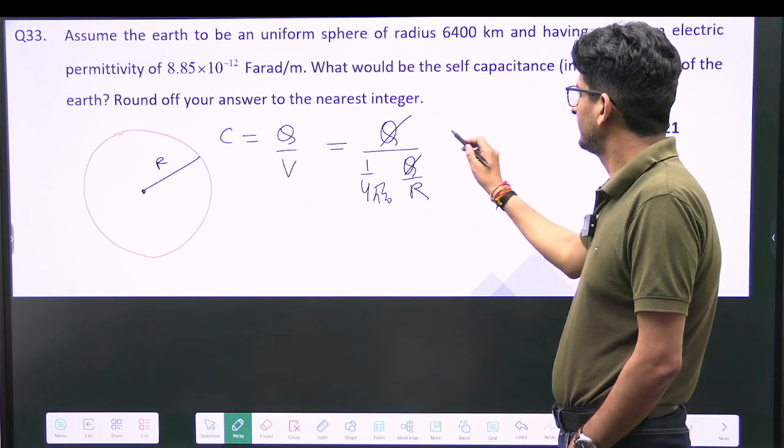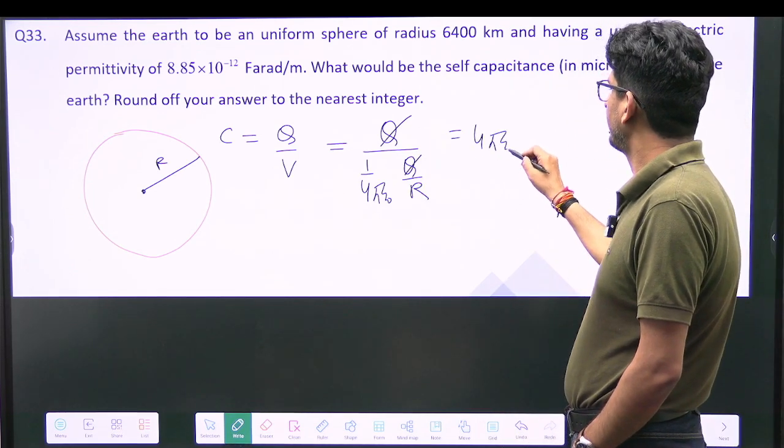So Q and Q will cancel and it will become 4 pi epsilon 0 R.